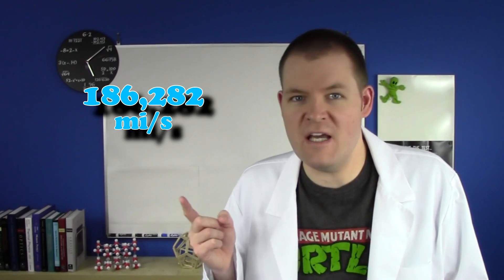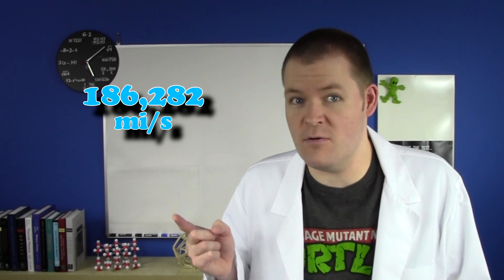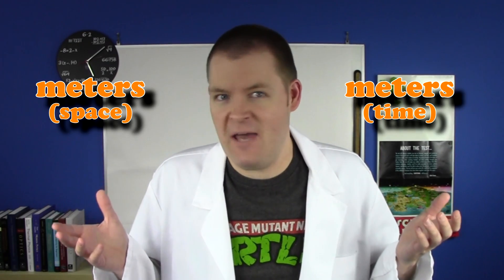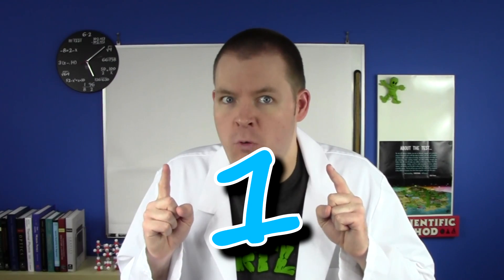In the US, you might say 186,000 miles per second, or 670 million miles per hour. Or in Canada, you might say 1.1 billion kilometers per hour. Units are kind of arbitrary. I mean, you could just as easily measure both space and time in meters, and the speed of light would be 1.